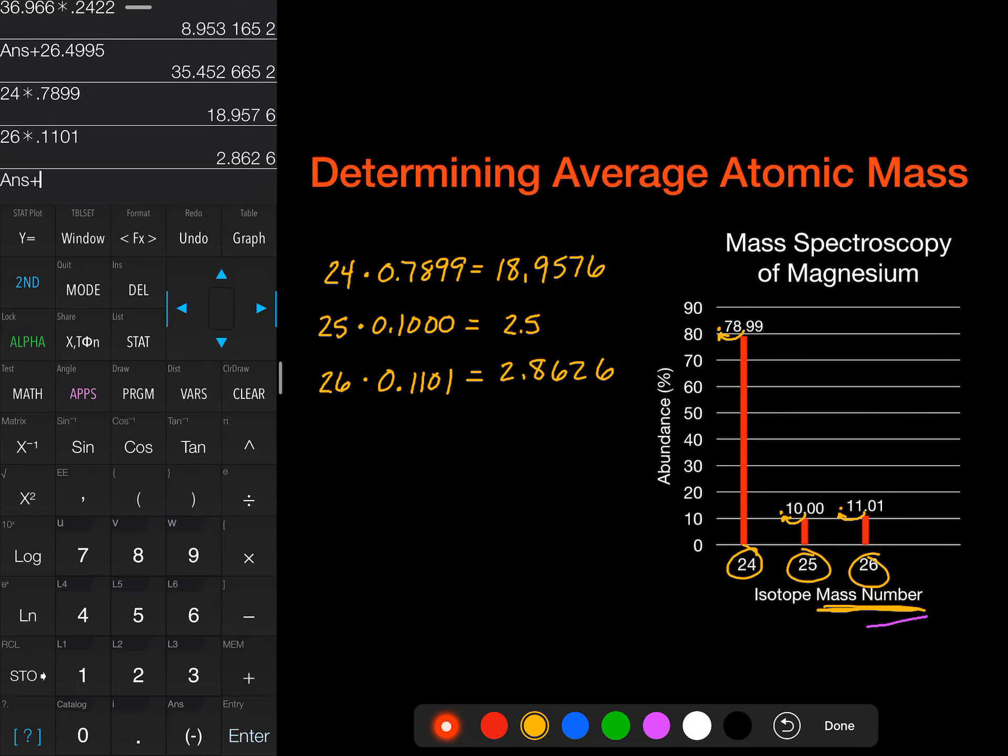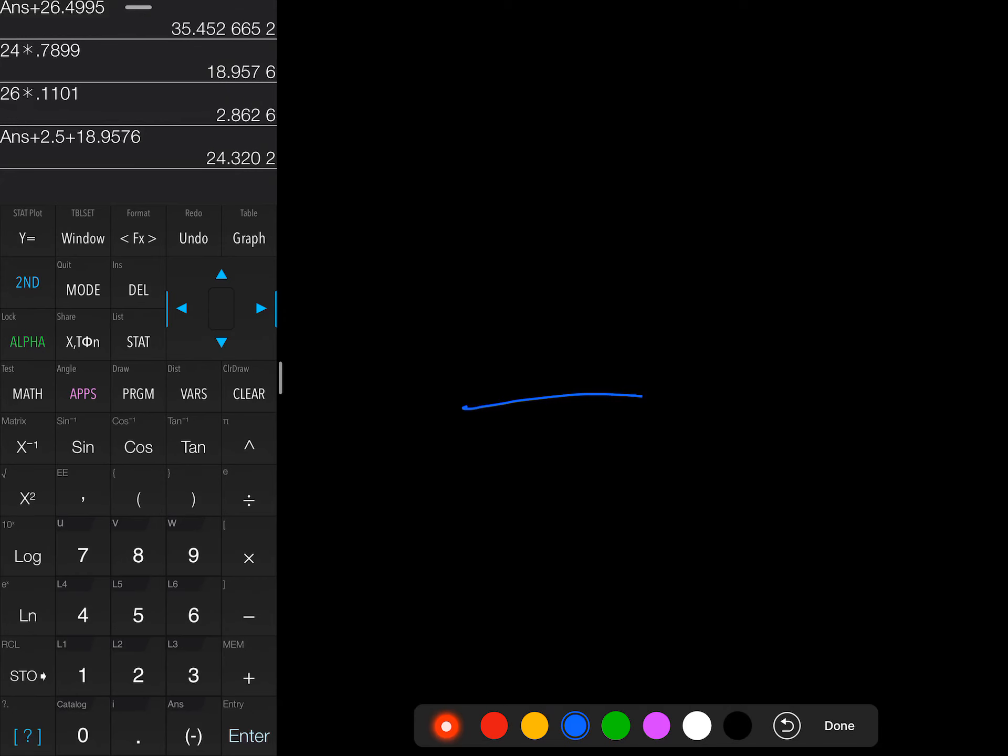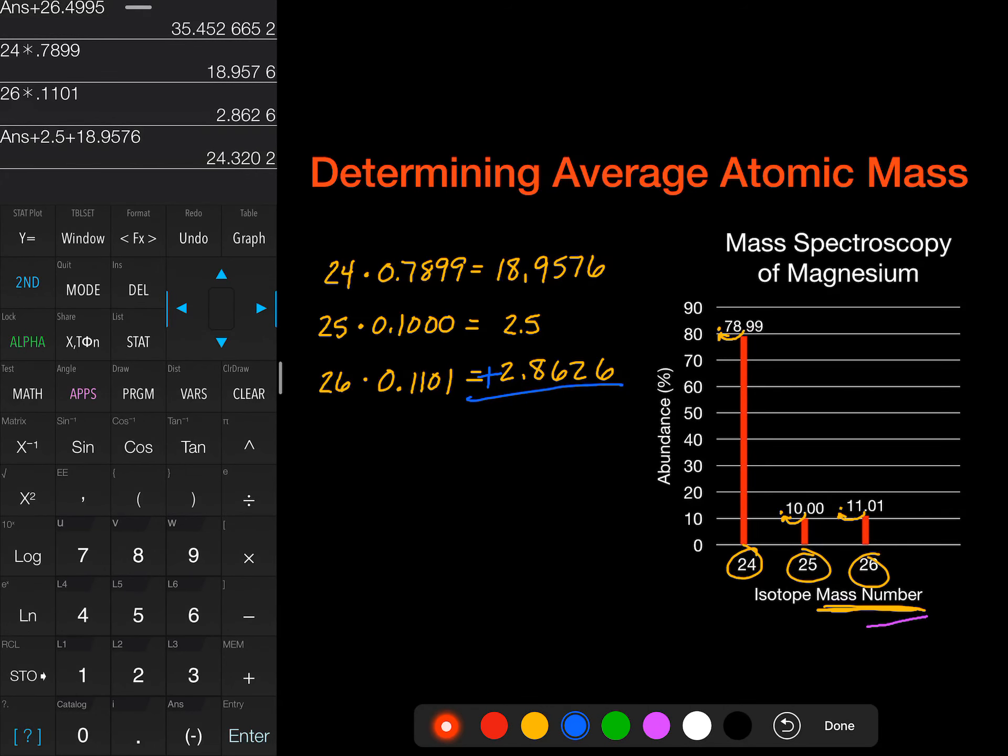So let's add all these together. And we get a value. So when I add all three of these together, I get a value of 24.32 AMU.